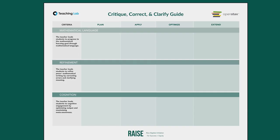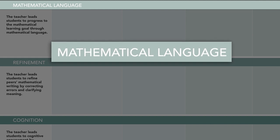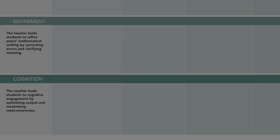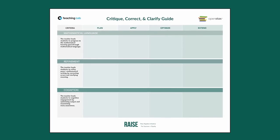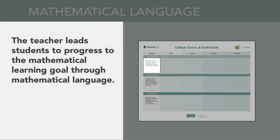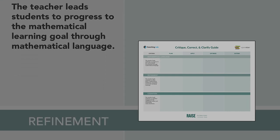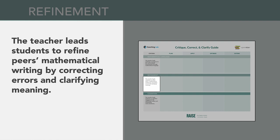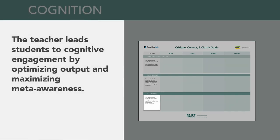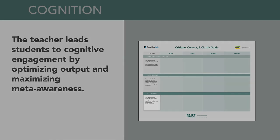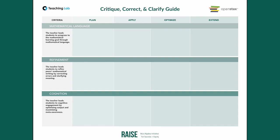Think of Critique, Correct, and Clarify as having three criteria: mathematical language, refinement, and cognition. When you apply all steps of the routine, you engage students in all three criteria. Specifically, one: the teacher leads students to progress to the mathematical learning goal through the use of mathematical language. Two: the teacher leads students to refine peers' mathematical writing by correcting errors and clarifying meaning. And three: the teacher leads students to cognitive engagement by optimizing output and maximizing meta-awareness. Throughout the video, we'll return to these criteria to help us customize this routine for our students.